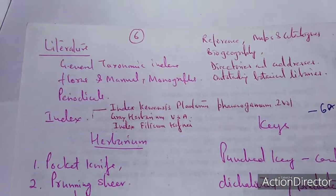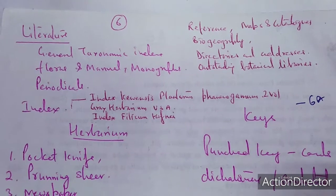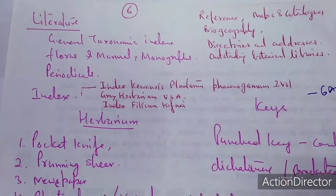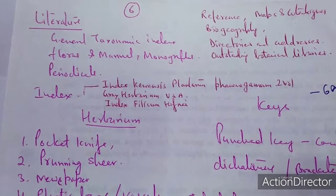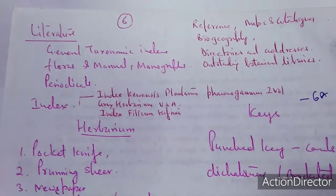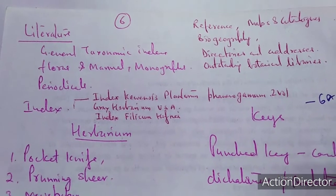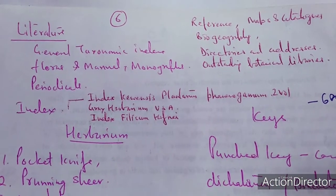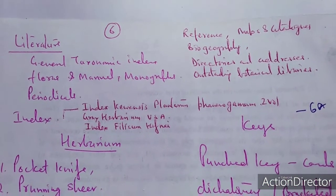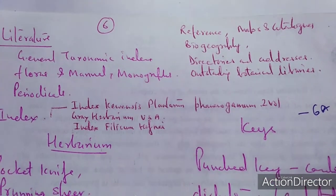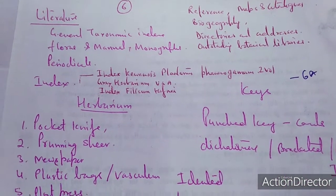Certain literature is also associated with the herbarium. Herbarium alone is not sufficient; literature is also associated with it. Without correct identification, the collection alone is just the first step. Taxonomic indexes, flora and manuals, monographs, periodicals, references, maps, catalogs, biographies, directories and addresses are all part of the associated literature. Outstanding botanical libraries are also required and are associated with the herbarium.